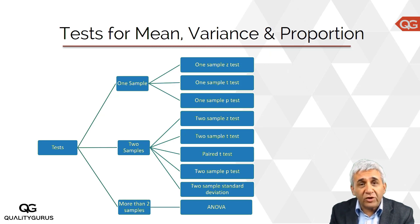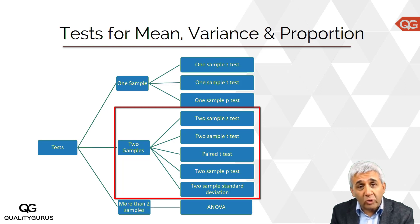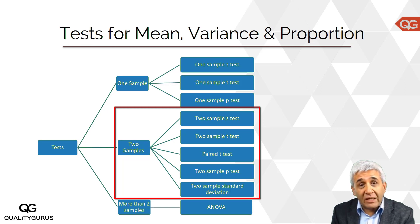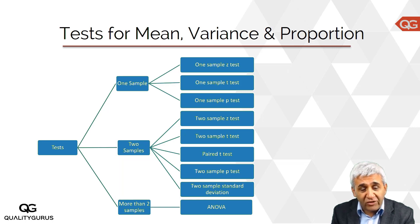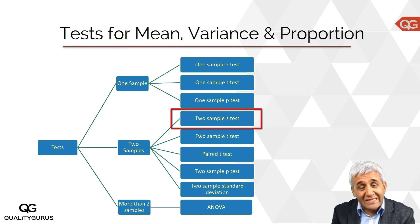Now, coming to the next step, which is two-sample tests. In this group, we will be talking about two-sample Z test, two-sample T test — and in two-sample T test we will also be talking about two different cases. We will then talk about paired T test, two-sample proportions or two-sample P test, and two-sample standard deviation. These five things we will be doing next, and later on we will talk about ANOVA, which is analysis of variance. Let's go step by step, starting with two-sample Z test.